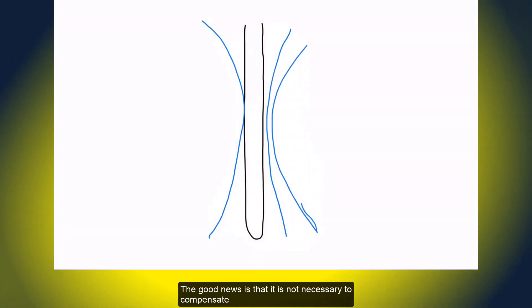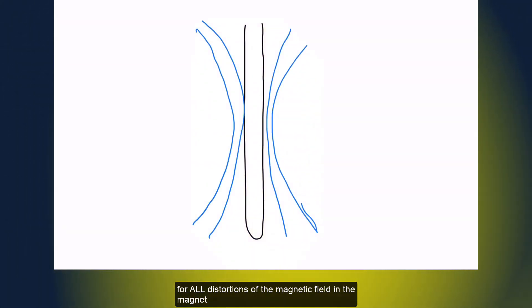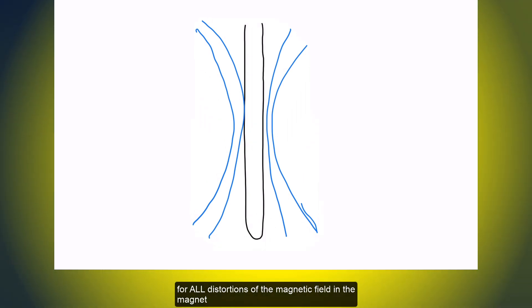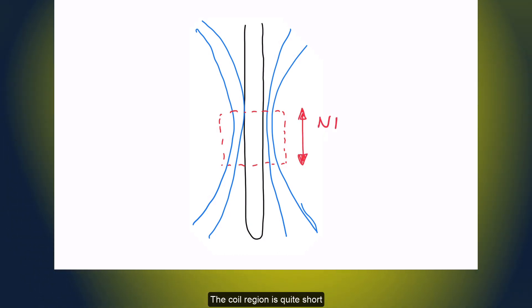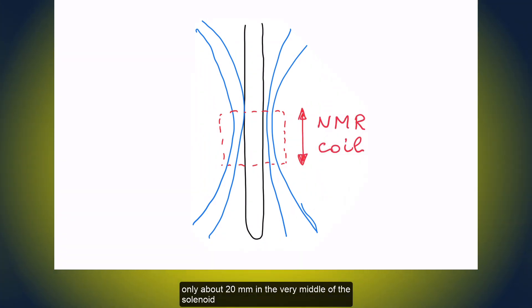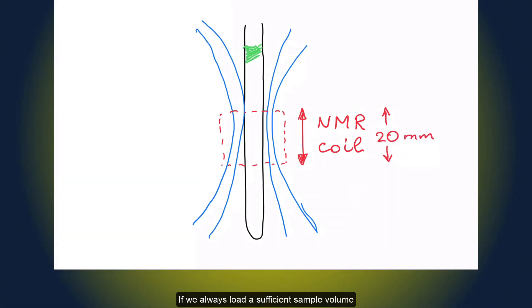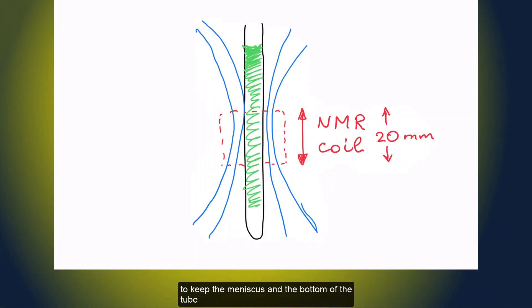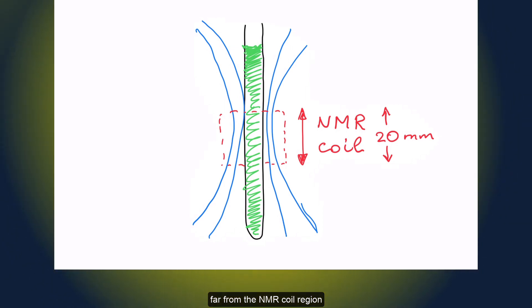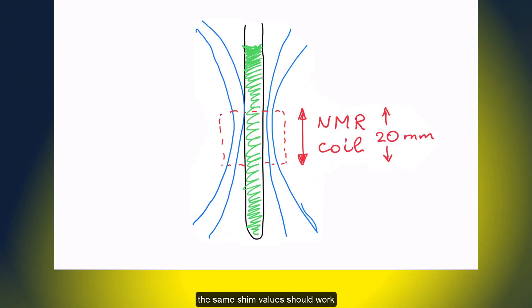The good news is that it is not necessary to compensate for all distortions of the magnetic field in the magnet. We only need to make the field straight where the NMR detection occurs. The coil region is quite short, only about 20 mm in the very middle of the solenoid. If we always load sufficient sample volume to keep the meniscus and the bottom of the tube far from the NMR coil region, the same shim values should work.